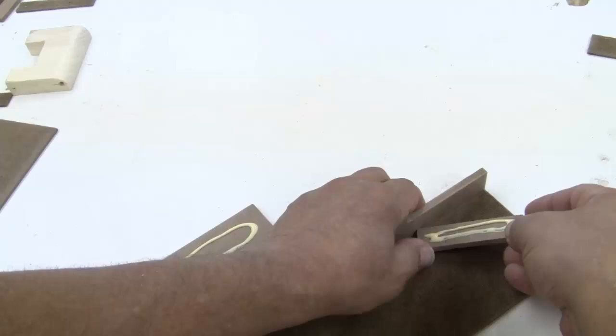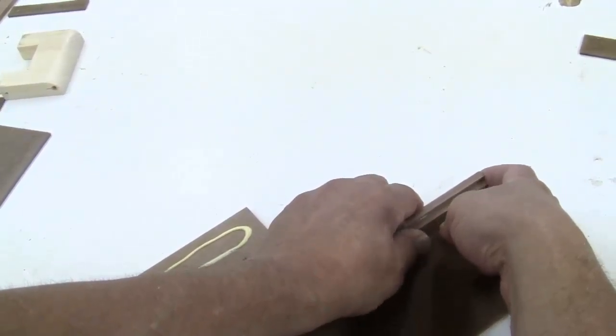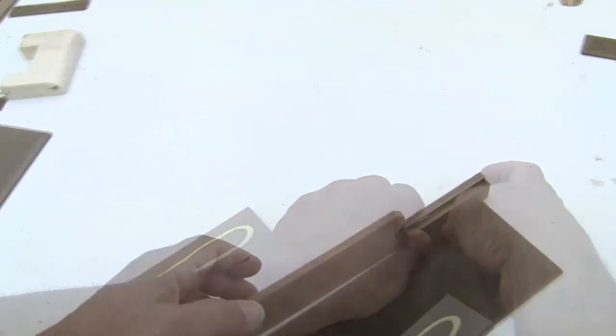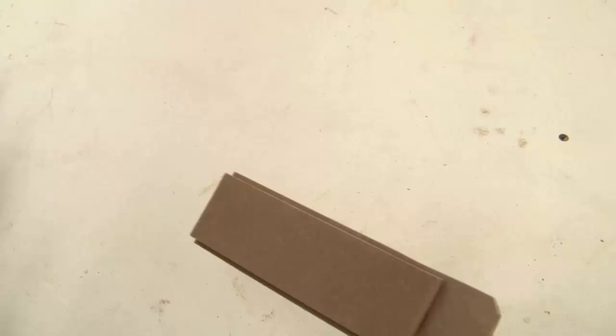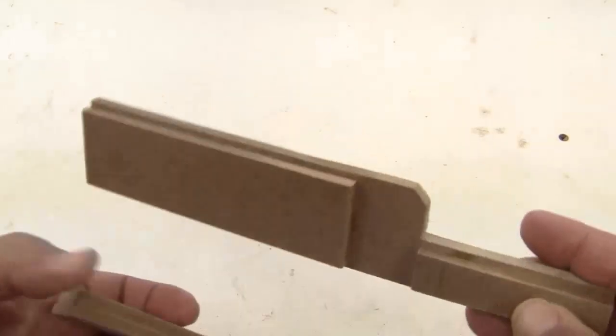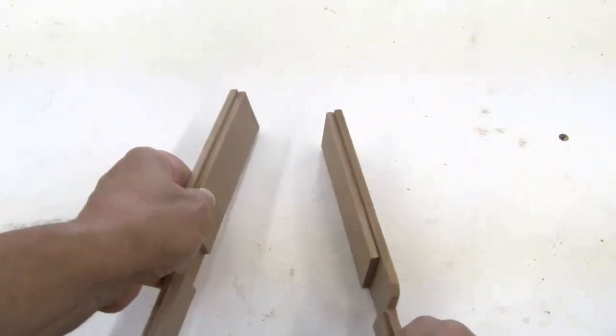Then I'm going to take the back filler, put it on top here, and make it flush with the back, and take the front filler and do the same thing. And I've done that with both the sides, and they're mirror images so they'll go together like this.